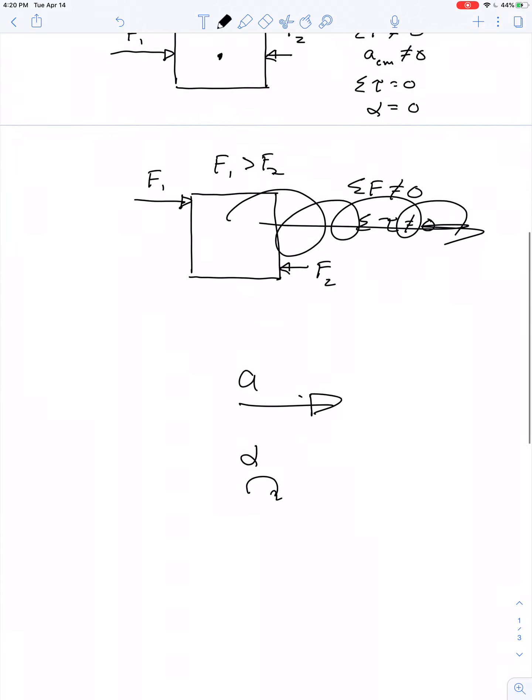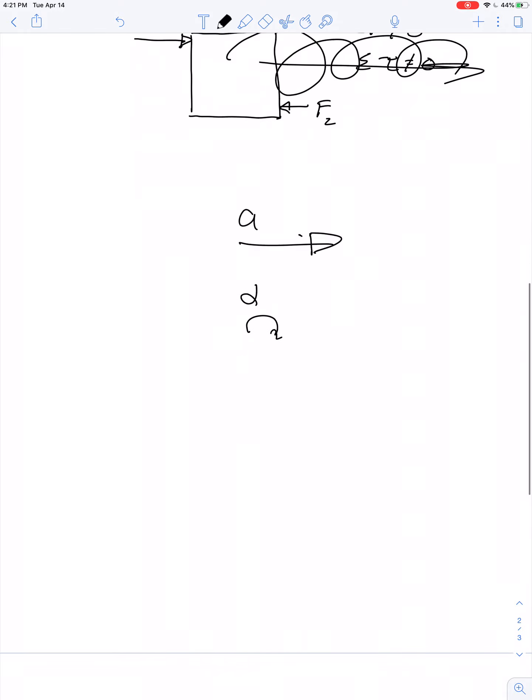Okay, so those are the conditions for equilibrium. The point of this unit, 4.3, on equilibrium and elasticity.